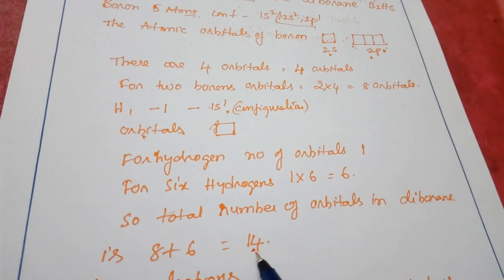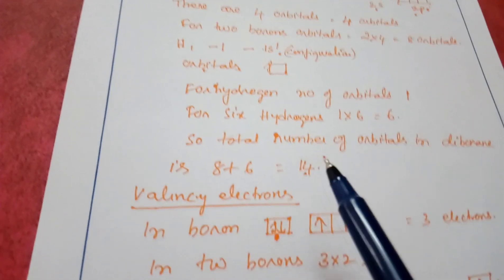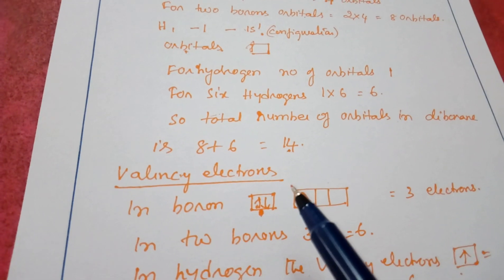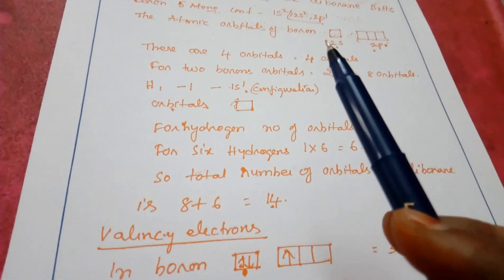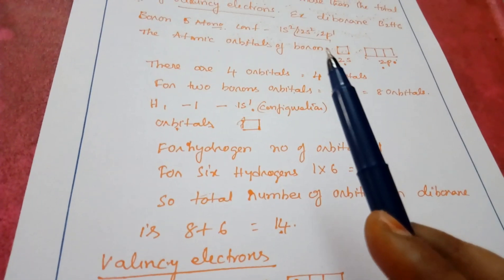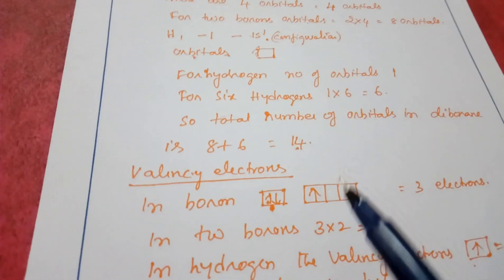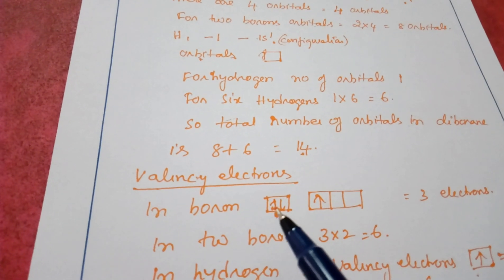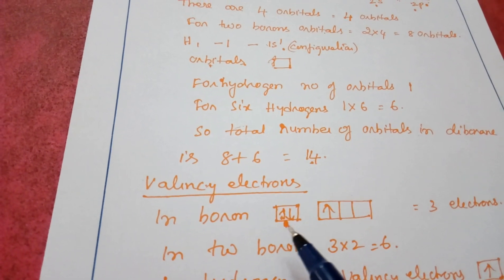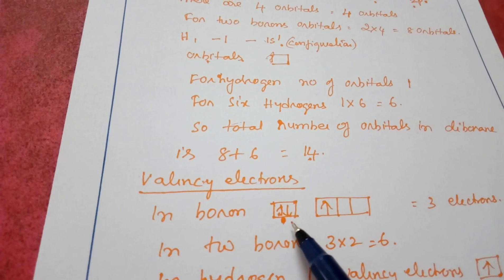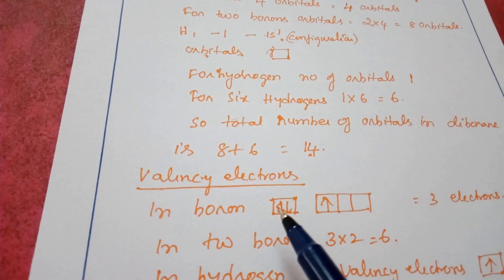Now let us count the valence electrons in diborane. For boron, the valence electron configuration is 2s² 2p¹, giving 3 valence electrons per boron — 2 electrons in 2s and 1 electron in 2p.